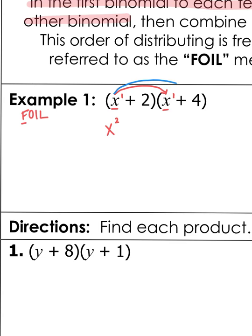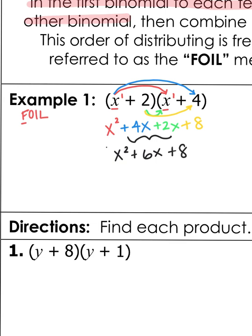Then I do the Outside — X times 4 — which makes 4X. Then I do the Inner — 2 times X is 2X. Then the Last — 2 times 4 makes 8. Once you do that, combine like terms. I have 4X and 2X, which makes 6X. So my final answer is X squared plus 6X plus 8.